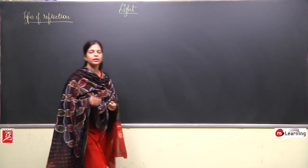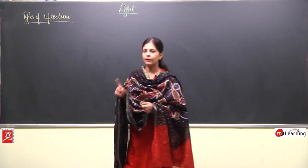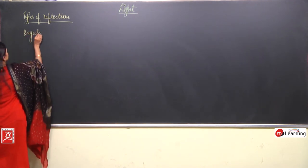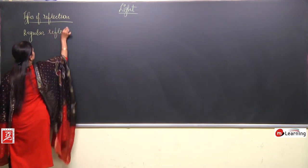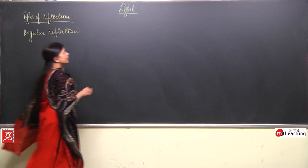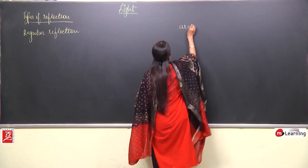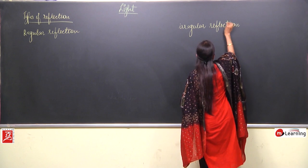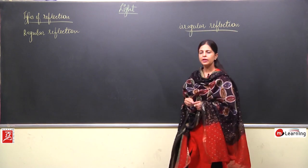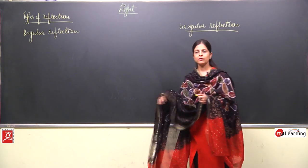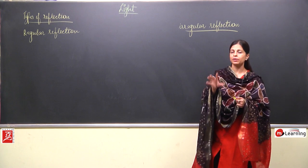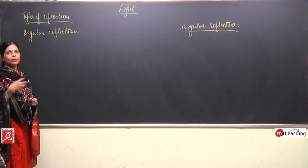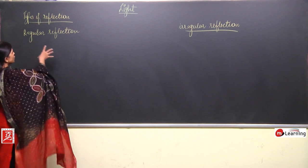There can be two types of reflection: regular reflection and irregular reflection. We will now discuss regular reflection. I am not going over the basic definition of reflection again since we have already discussed that, including different definitions. So now, what is the meaning of regular reflection?